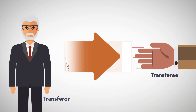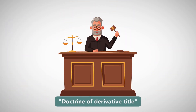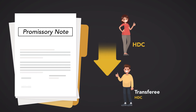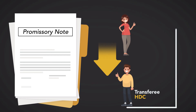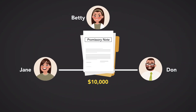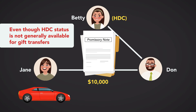A transferee to whom an instrument is properly negotiated gains the rights of the transferor. At common law, this was called the doctrine of derivative title. Thus, if an HDC gives her note to another person, the transferee retains HDC status, even when the transfer is not normally the type to confer HDC status. This is called the shelter doctrine. For example, if Jane gives Don a $10,000 promissory note in exchange for Don's car, Don is an HDC. If Don gifts the note to his friend Betty, then Betty benefits from being an HDC. Even though HDC status is not generally available for gift transfers, Don can convey his HDC status to Betty.